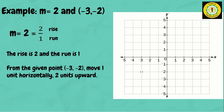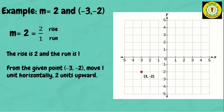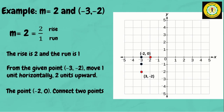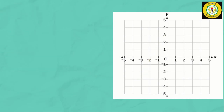Let's plot the given point (negative 3, negative 2). From that point, move 2 units upward and 1 unit horizontally to the right. So we get the new point (negative 2, 0). Now connect the two points.